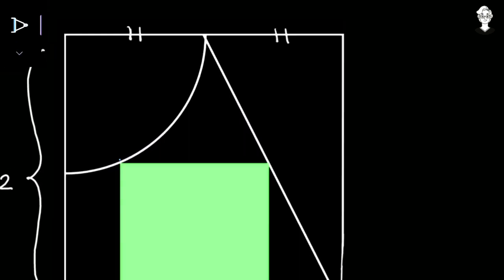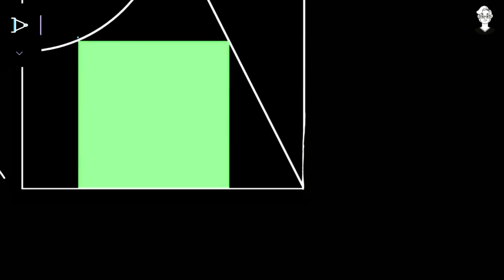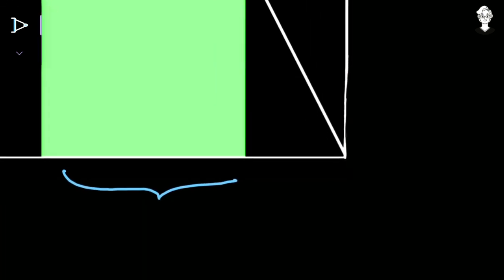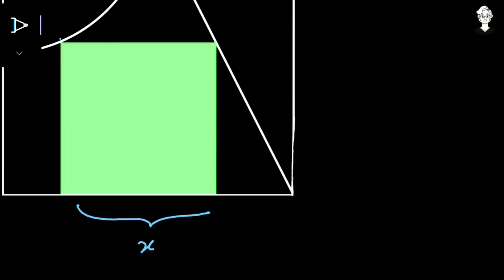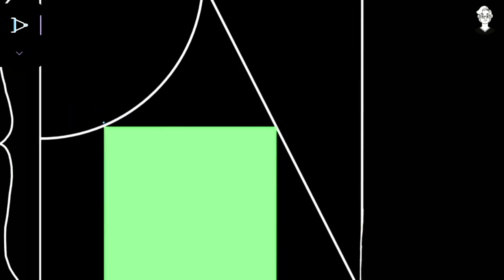First, we will consider the side of this square as some variable. Let the side length be equal to x. As it is a square, all four sides are equal to x. This side of the square — we will just extend it in a straight line.